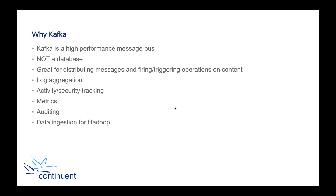So let's start with why you would use Kafka. Kafka is a high-performance message bus — and I want to stress that it is a message bus, not a database. It is a method of sending small discrete messages over a system. It runs on a publish-subscribe model: you publish to a particular topic, you can subscribe to a particular topic and get the information. It's a great way of distributing messages between different places, and because it's so high performance and efficient, we can use it for things like log aggregation.